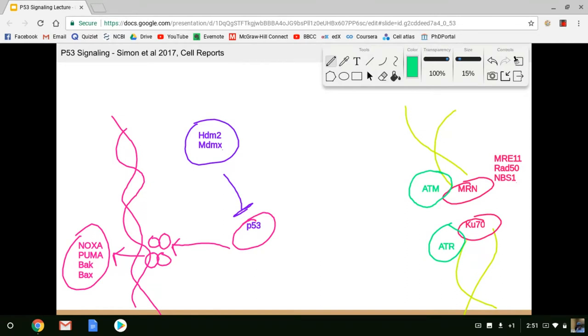But when ATM binds to MRN at the DNA double-stranded break, it somehow activates ATM and ATR. Although the mechanism isn't understood, it does activate them. And ATM is a kinase. ATM is a kinase that will then phosphorylate CHK2. And ATR does something very similar. It phosphorylates CHK1. So we have the phosphorylation and the activation of CHK2 and CHK1.